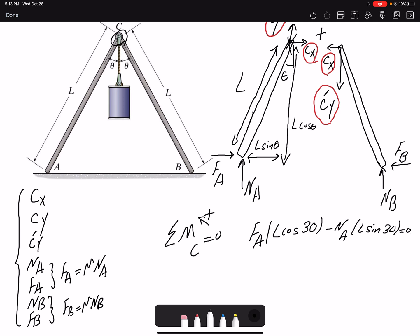So if I replace this with mu times NA, I will find - I cross out NA from each side. If I move it to the other side, I will find mu to be equal to tangent 30.